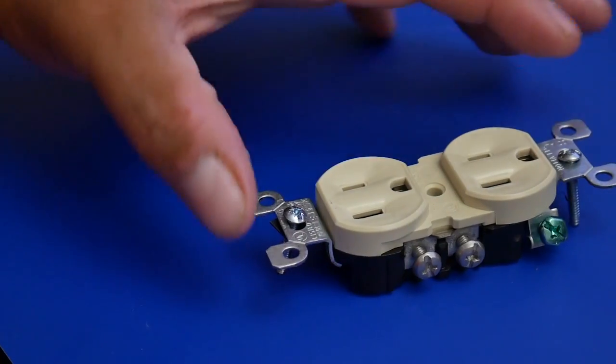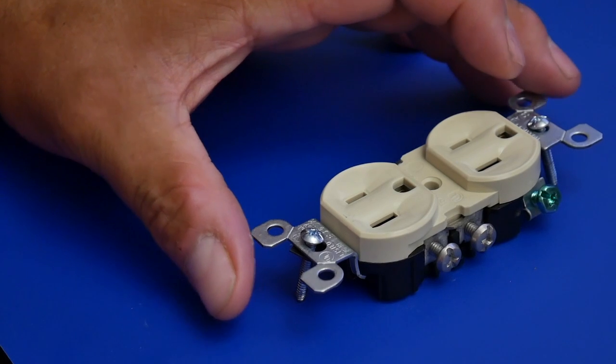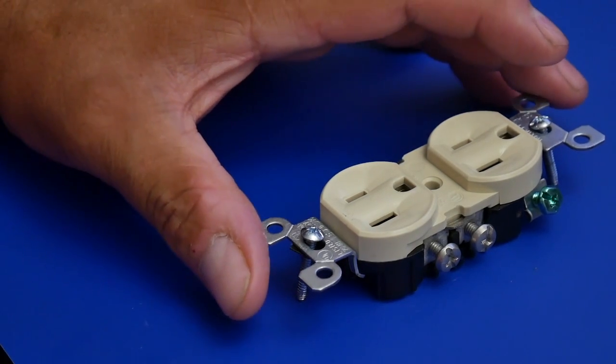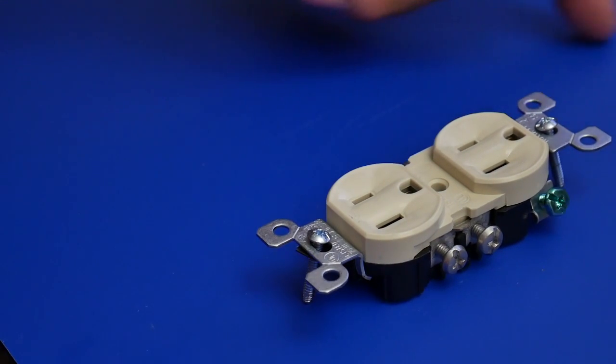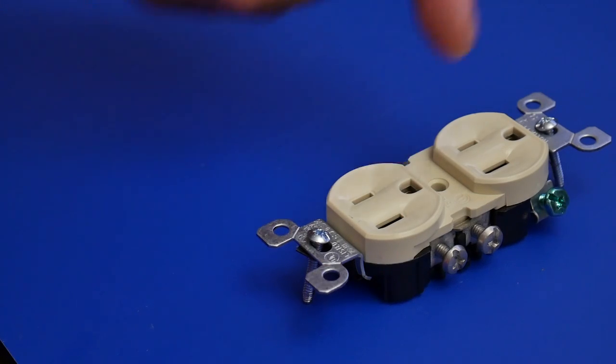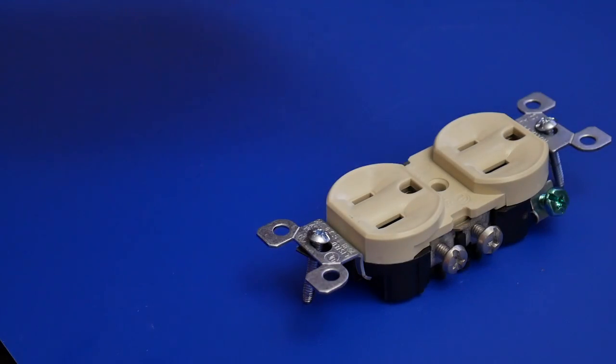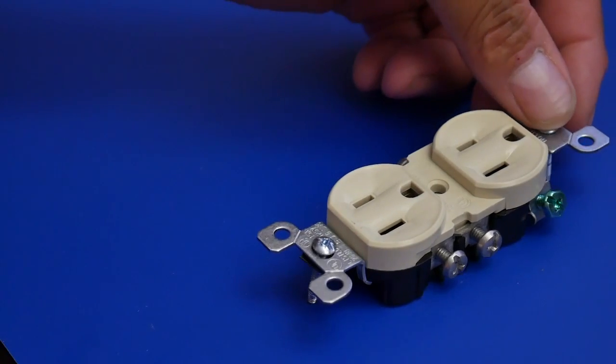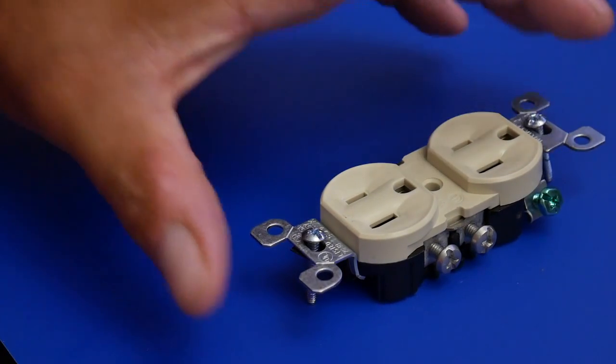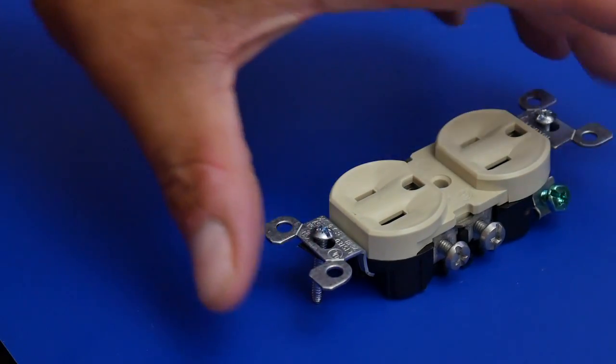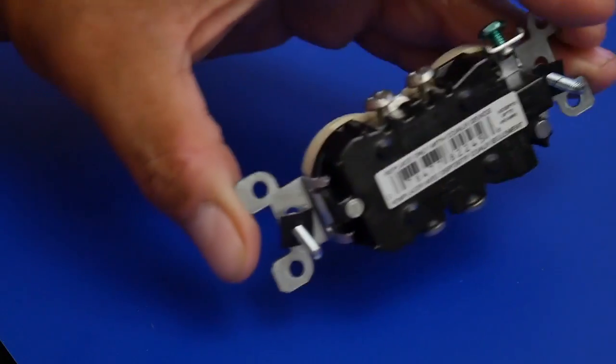Now that we understand where the wires are supposed to go and get an idea of how it works: the black supplies the power which is the line, and the white brings it back to the service panel. The ground is a safety but also brings it to the ground, a plumbing device with water or an actual rod in the ground.